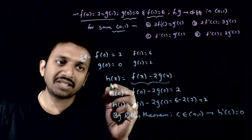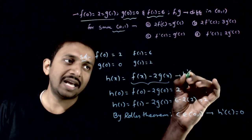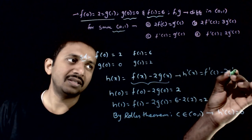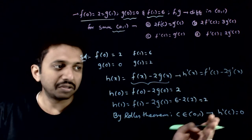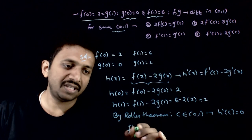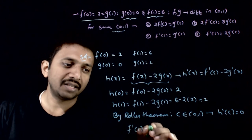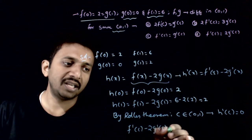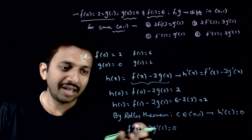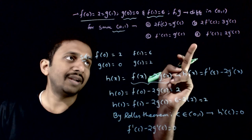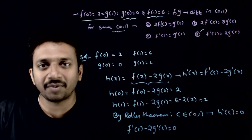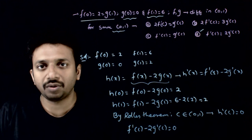So what is h'(c)? h'(x) = f'(x) - 2·g'(x), so h'(c) = f'(c) - 2·g'(c) = 0, at least for one value of c between 0 to 1. Hence, f'(c) = 2·g'(c). This must hold for at least one c in the interval (0, 1).